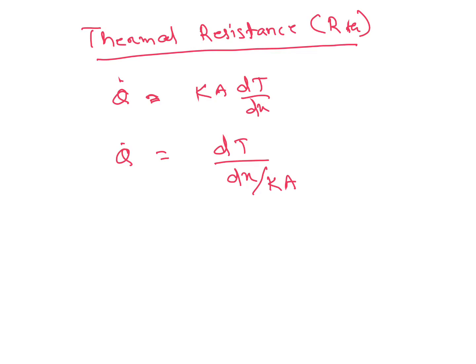So dX by KA. A is area of cross-section, dX is our thickness, K is thermal conductivity.